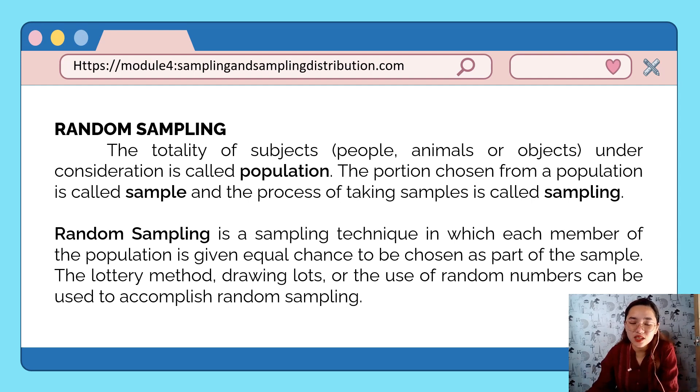The most common sampling used in research is called random sampling. It is a sampling technique in which each member of the population is given an equal chance to be chosen as part of the sample. The lottery method, drawing lots, or the use of random numbers can be used to accomplish random sampling.